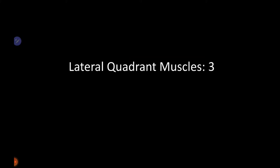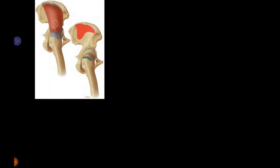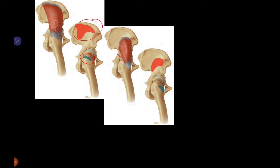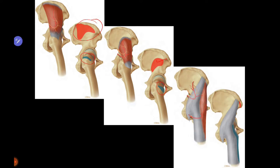The first lateral quadrant muscle is gluteus medius, which takes its origin from the iliac fossa and inserts over the posterolateral facet of the greater trochanter. Gluteus minimus lies deep to gluteus medius and inserts over the anterior facet of the greater trochanter. Tensor fascia lata arises from the anterior superior iliac spine and inserts over the iliotibial band.